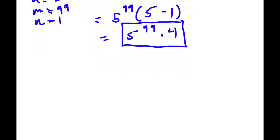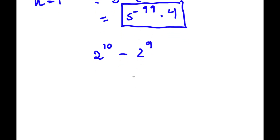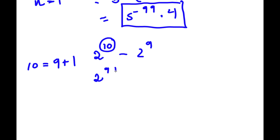Now I'm going to give you guys a similar problem. You should be able to solve this using the same tricks. We have 2 to the power of 10 minus 2 to the power of 9. Pause the video and try to solve this problem. So what we're first going to do — we have our 10. Remember, 10 is equal to 9 plus 1. So now I'm going to replace this 10 with 9 plus 1, giving us 2 to the power of 9 plus 1 minus 2 to the power of 9.